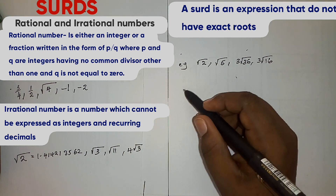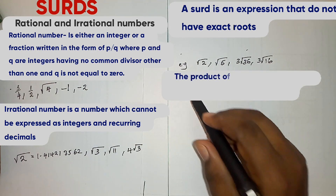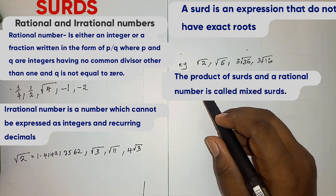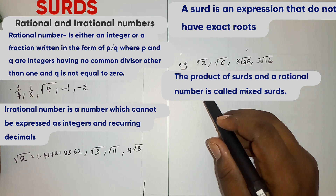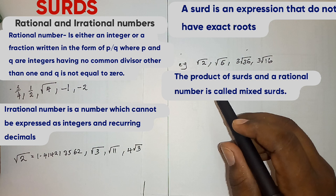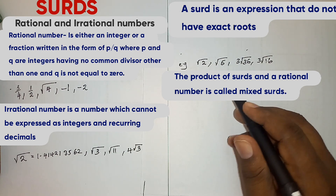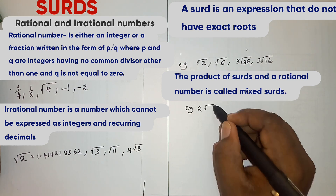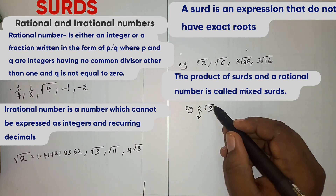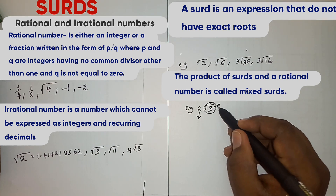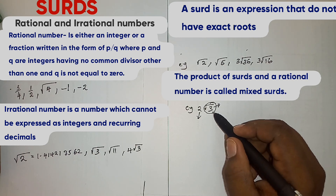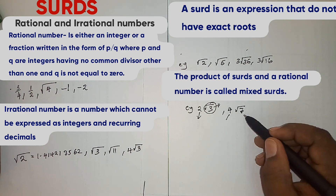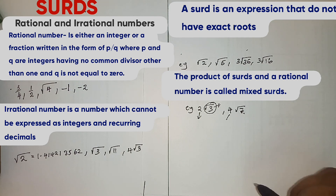Note: when you multiply a surd by a rational number, the product is called a mixed surd. For example, 2 root 3 — where 2 is a rational number and root 3 is a surd — is what we call a mixed surd. We also have 4 root 7, where 4 is a rational number and root 7 is a surd.